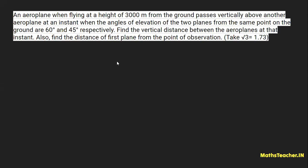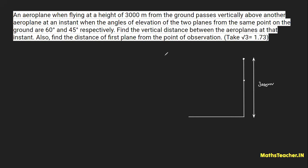Let me draw the figure properly. Let's suppose this is the position of the first aeroplane, this is the position of the second aeroplane, and this is the horizontal ground. Reading the question again: the first aeroplane is flying at a height of 3000 meters — so this total distance will be 3000 meters. The question says: passes vertically above another aeroplane at an instant when the angle of elevation of the two planes from the same point on the ground are 60 degrees and 45 degrees.